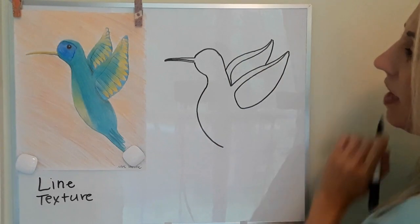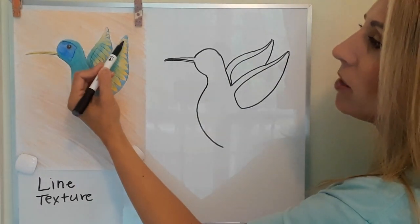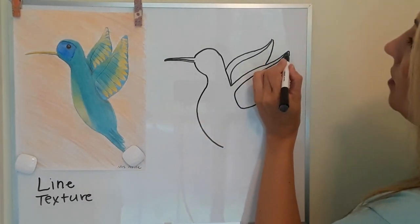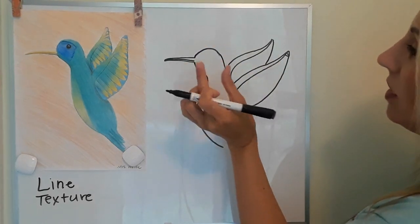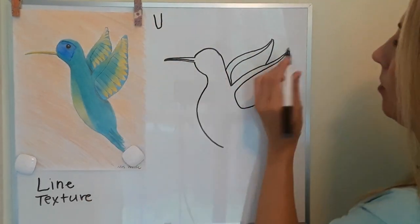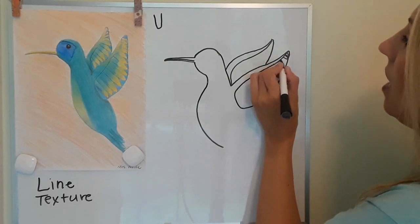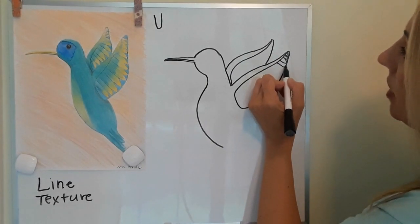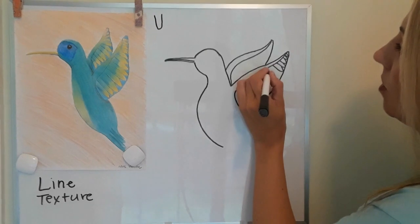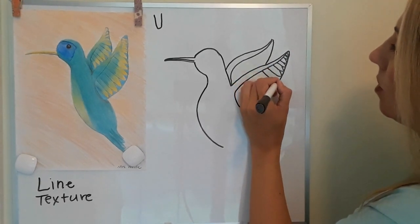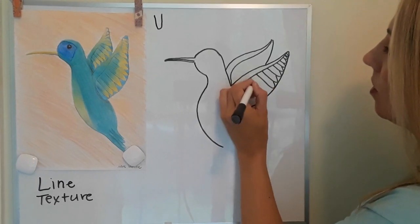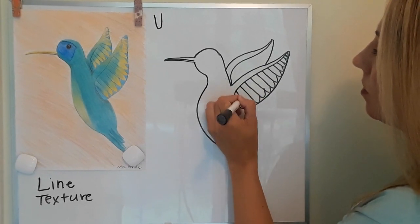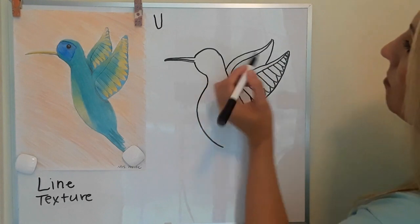Now we're going to do our lines that are going to be the texture for the feathers. All you're doing is kind of a little squishy U — a really skinny little U shape — and just keep doing them. You want to bring them down to this part and have them touch. Then do the same thing up here.